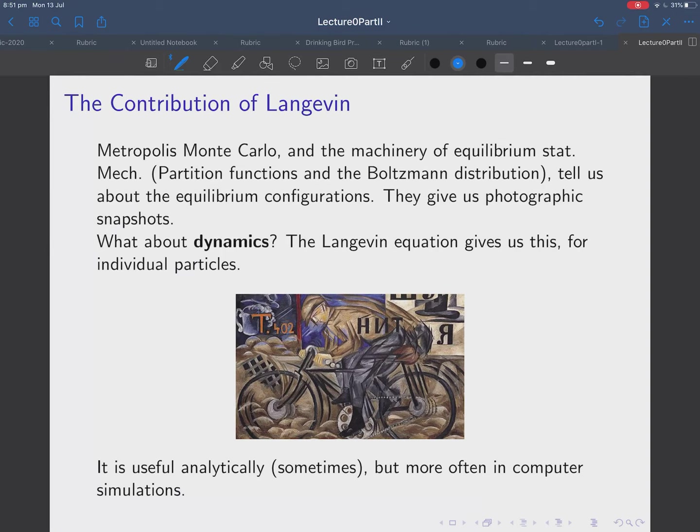What about, what are we talking about here? Well, what did Langevin do? So, we've looked at Metropolis Monte Carlo, which gives us a method of looking at equilibrium statistical mechanics. So, it basically reproduces partition functions and Boltzmann distributions, etc. So, we can look at snapshots of the equilibrium configurations.